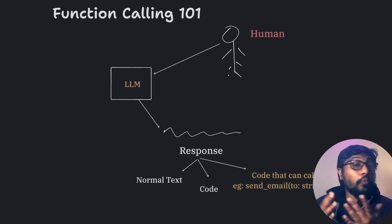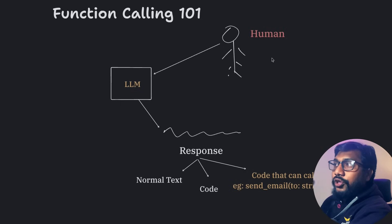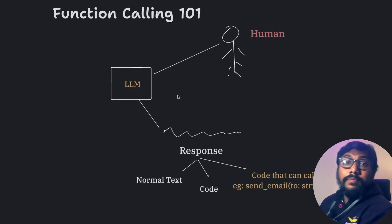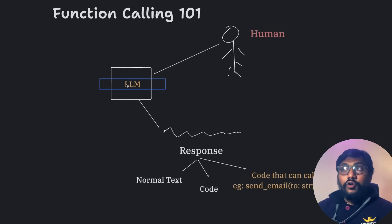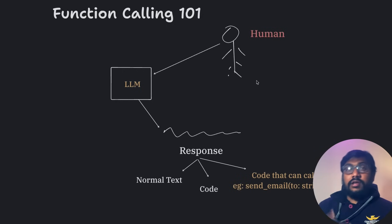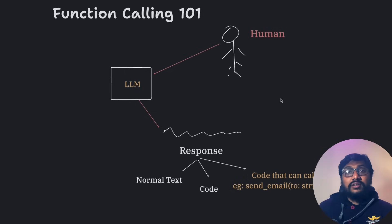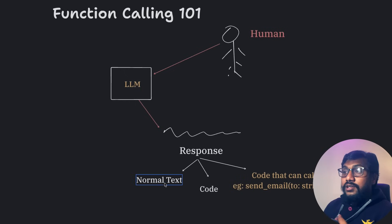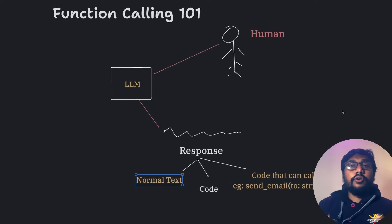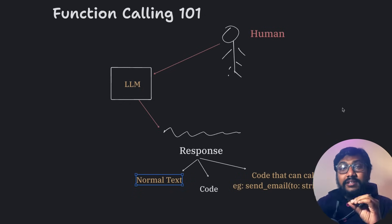The bigger question is: what is function calling? Let's take a scenario. You have got a human being and the human being talks to an LLM — what everybody popularly calls AI. Typically the response works like this: the human asks a question, the AI comes back with an answer. When the AI comes back, the answer could be of multiple different types. One: the answer could be simple normal text — for example, 'What is the capital of India?' and the answer is 'New Delhi is the capital of India.'